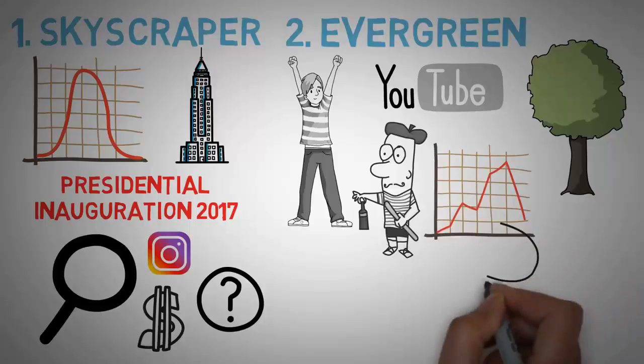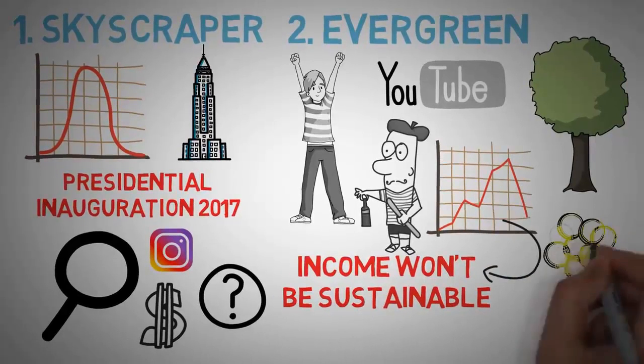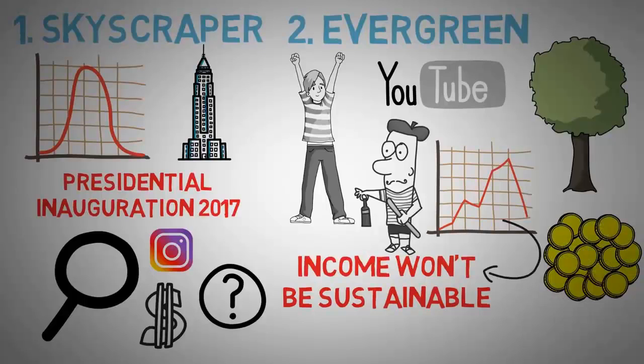Just like the Harlem Shake died down, so will bottle flips and the next trends. Now you can make money with these kinds of trends, but you have to be able to predict them, and the downside is that the income won't be sustainable. It will be a lump sum. Evergreen content, on the other hand, brings you in money every day, every week, every year for the rest of your life.